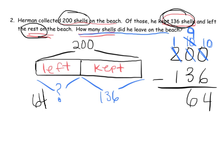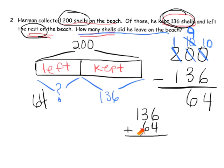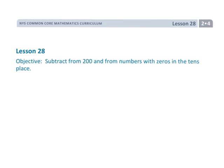He left 64 shells at the beach. Now how can we be sure we're right? We could use addition: 136 plus 64. If we add those two together, we should get 200. This is a nice visual representation of why you can use addition to check your subtraction. We could use addition, and that answer should be 200. And that is Grade 2, Module 4, Lesson 28 — using the standard algorithm and a whole lot of unbundling, which in the olden days we used to call borrowing.